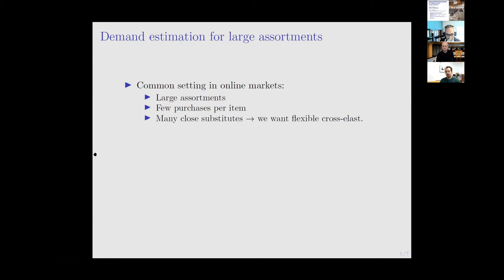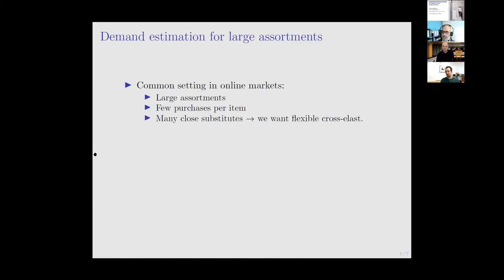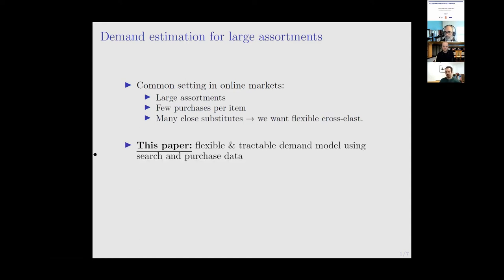Moreover, as we add more products, we cover the relevant characteristics space more densely, so we'll have many products that are arguably quite similar. If we think about estimating demand and the joint price-setting problem across the assortment, substitution patterns are a first-order issue. The object of interest is high-dimensional - it's the cross-price elasticity matrix across hundreds of products - and at the same time we have sparse purchase data.